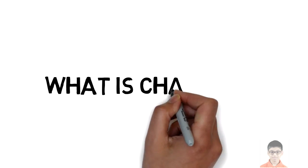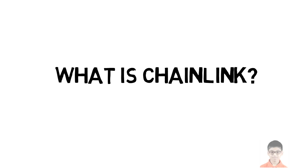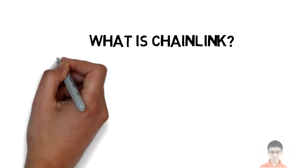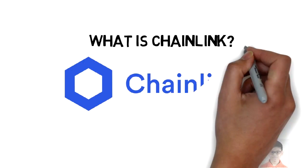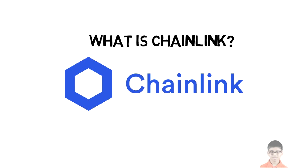Chainlink is a blockchain-based decentralized oracle network that allows smart contracts to connect to external data sources. These include APIs, internal systems, or other types of external data feeds. LINK is an ERC-20 token that is used to pay for this oracle service on the network. So what makes Chainlink decentralized?